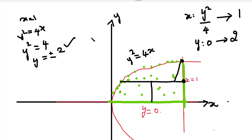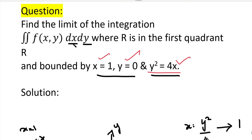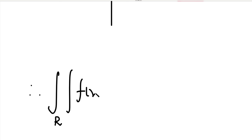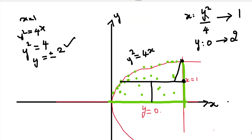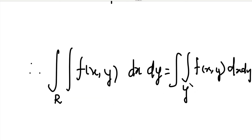So the double integral ∬ f(x, y) dx dy equals the double integral with x limits from y²/4 to 1, and y limits from 0 to 2. The inner integration is with respect to x, with lower limit y²/4 and upper limit 1. The outer integration is with respect to y, with lower limit 0 and upper limit 2.